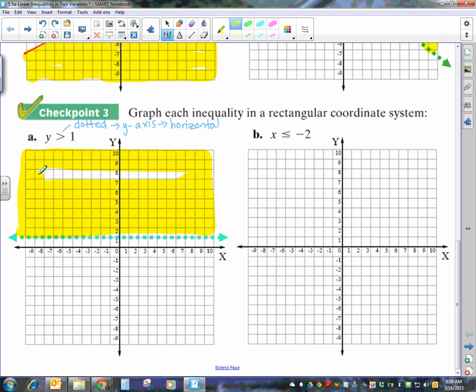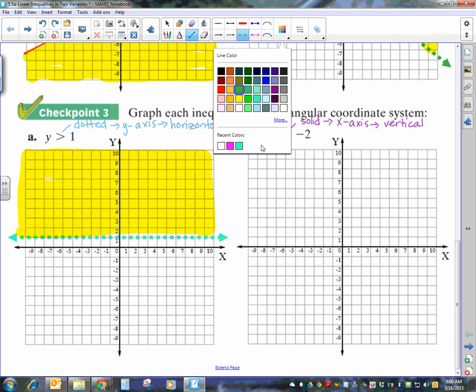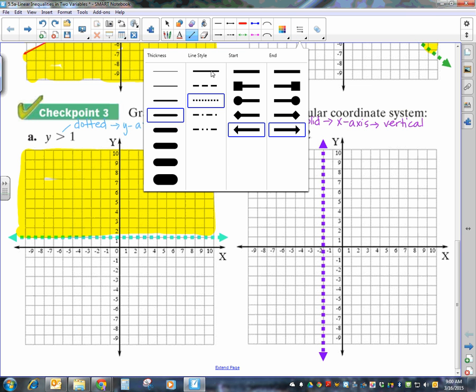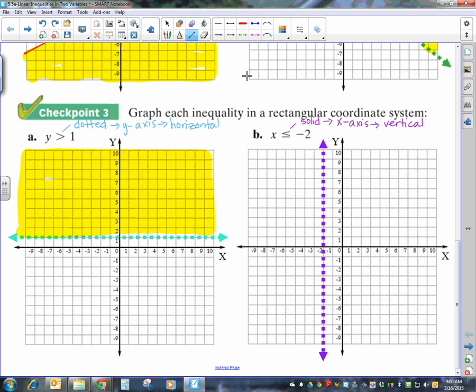And then the last one says x is less than or equal to negative 2. And, again, this one says equals, so we're going to have a solid line. It is x by itself, so it will intersect the x-axis. In this case, we will have a vertical line. And, where is that vertical line going to go through? It's going to go through at x equals negative 2. So, I'm going to choose that dotted line again and go through at negative 2, which is right here. So, x-axis is not supposed to be dotted. It's supposed to be solid. Let's see if that changed that.